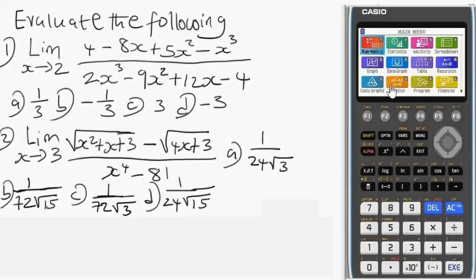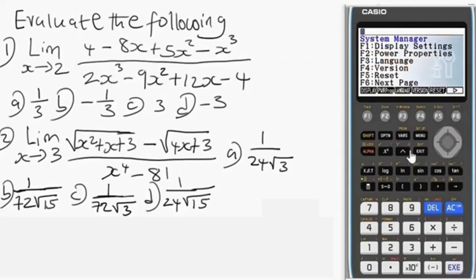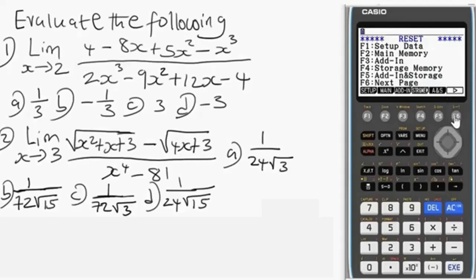To reset it, all you have to do is use this navigation button. We are going to go to System. When you get there, EXE is a button on this calculator signifying equals to. So when you press EXE you will see it says F5. Once you press F5 you go to next page, you press F6.